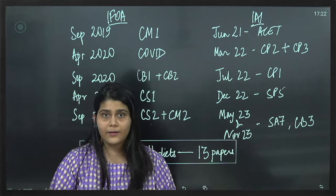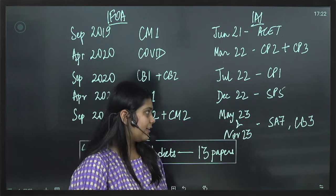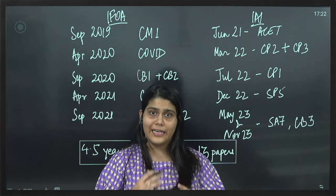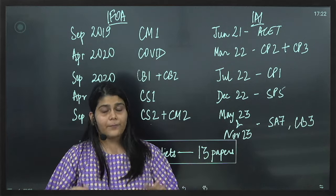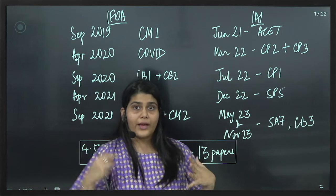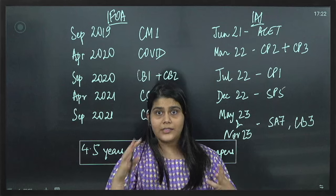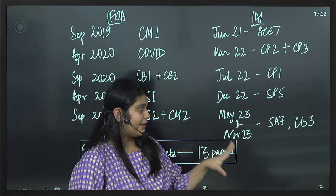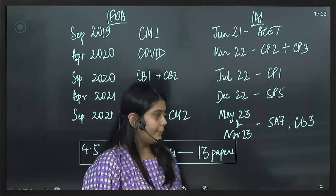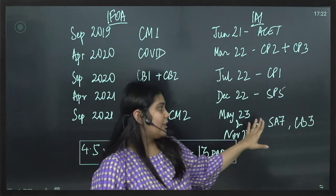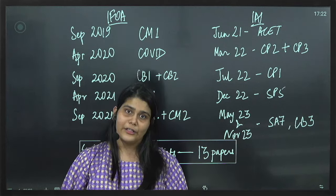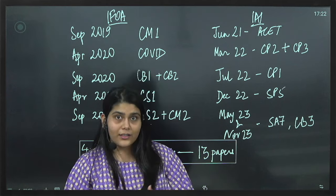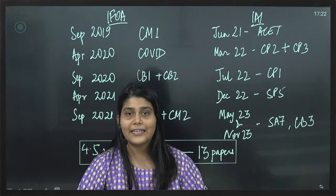I could not clear my exam in the May 2023 diet when I had also appeared for CB3, which was a business simulation game. It is a very interesting paper, very practical paper, wherein they give you real world scenarios and ask you to simulate four rounds of teamwork. In November 2023 I reappeared for SA7 and cleared it, which was the end of my actuarial journey, not the entire journey but yes the exam part of it.